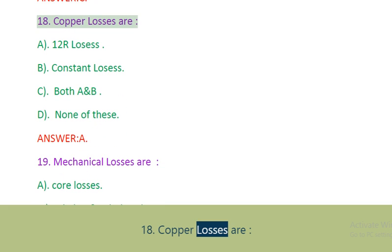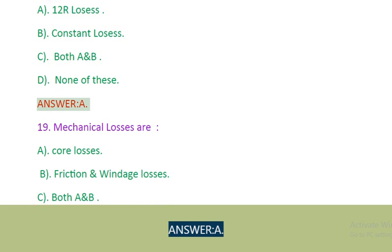Question 18: Copper losses are. A. I²R losses. B. Constant losses. C. Both A and B. D. None of these. Answer: A.